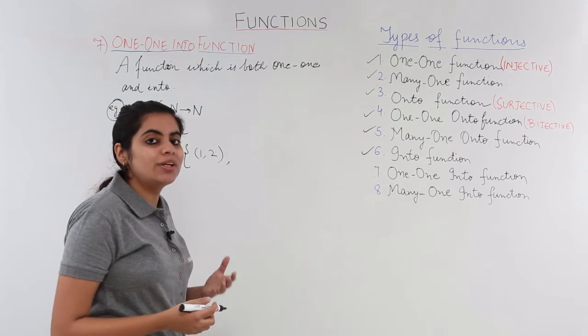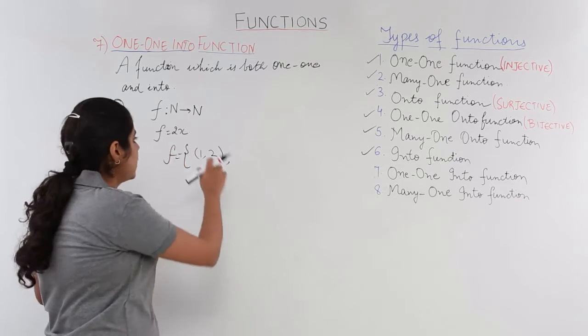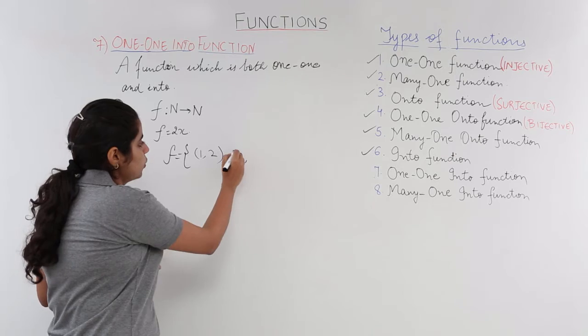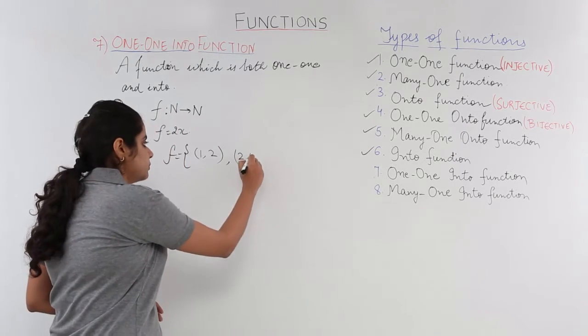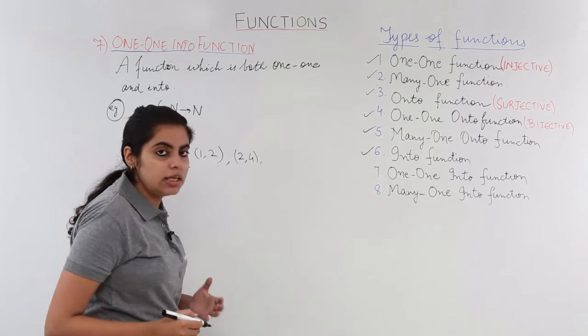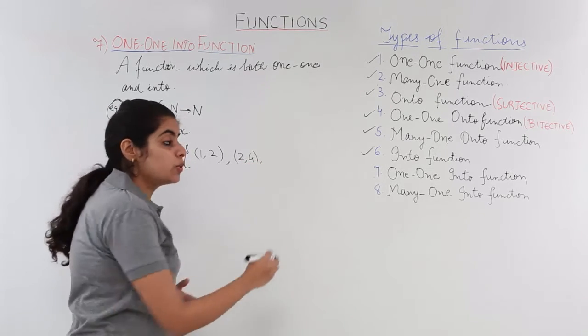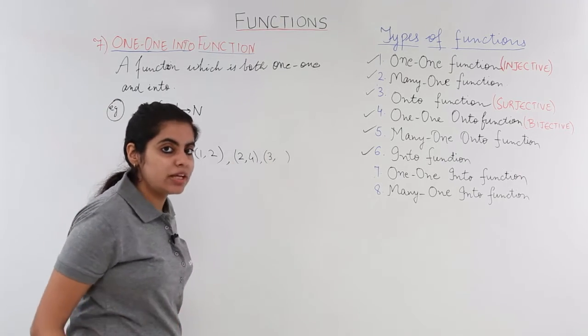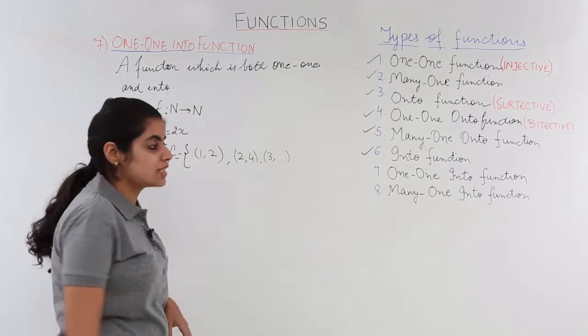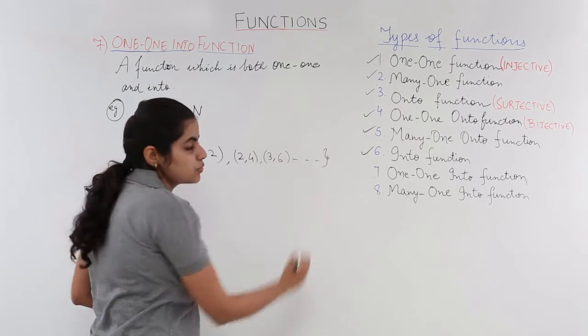Next, we put x = 2. When you put x = 2, the value of f is 2 into 2, that is 4. Similarly, when you put x = 3, you get 2 into 3, which is 6, and this function continues.